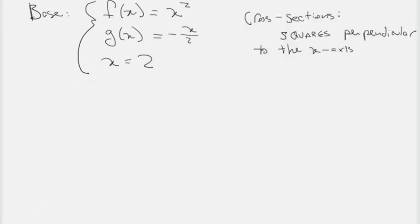And for the cross-sections, we're going to be using squares that are perpendicular to the x-axis. So these cross-sections are going to be like standing up on the base, and changing. Their dimensions are going to change proportional to how the area between these functions changes. So let's look at that graphically.